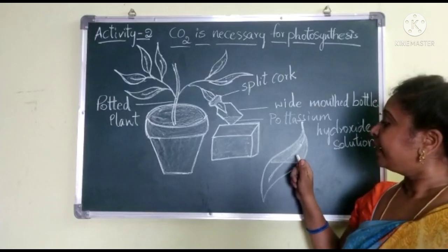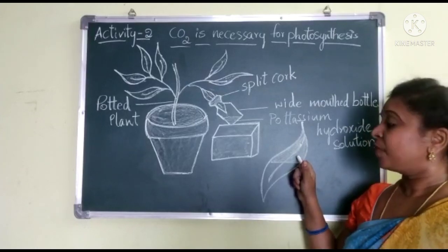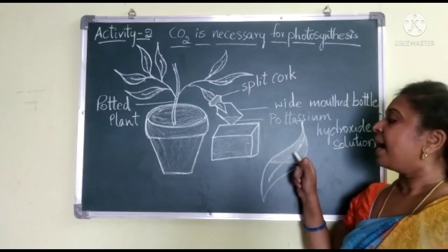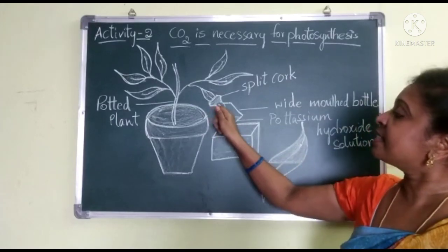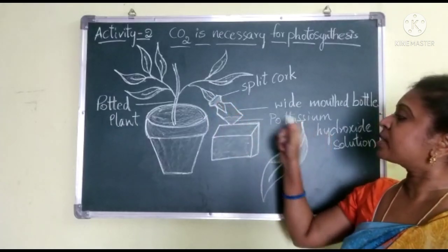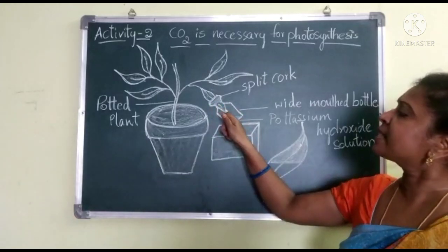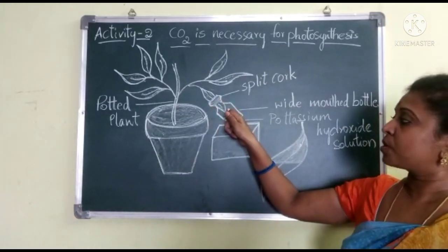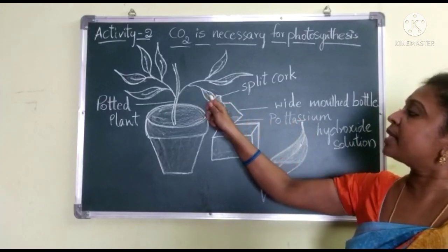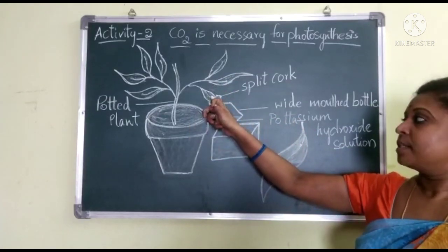Why does this happen? The portion outside the bottle was exposed to the external atmosphere, so it had the ability to take in carbon dioxide. It used carbon dioxide and performed photosynthesis. But the leaf portion inside the bottle — whatever carbon dioxide entered the bottle was removed by the potassium hydroxide solution. So that half of the leaf could not perform photosynthesis, meaning starch content is absent. The portion outside the bottle performed photosynthesis and stored glucose as starch.